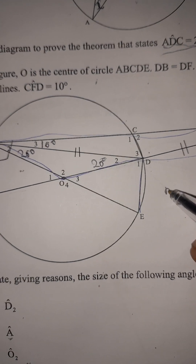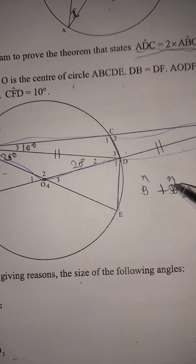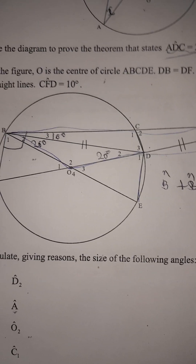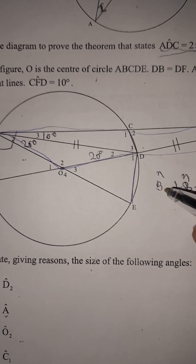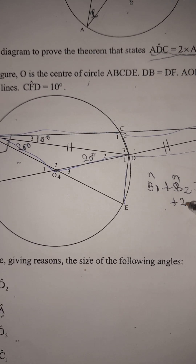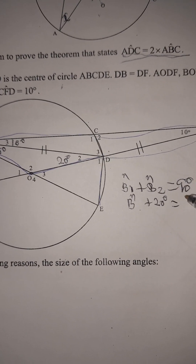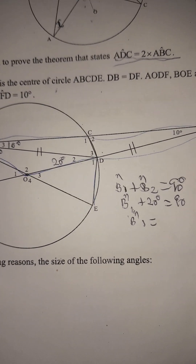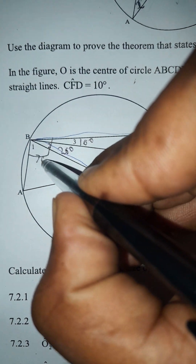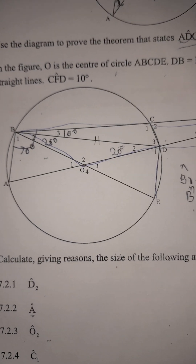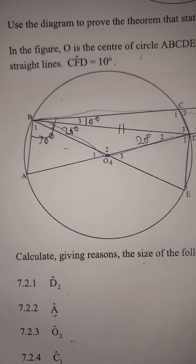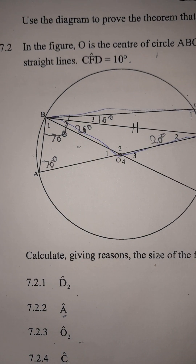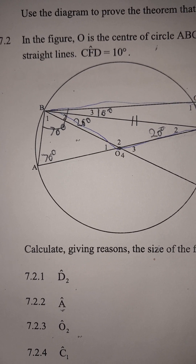To get angle B1, remember that angle B1 plus angle B2 equals 90 degrees — angle in a semicircle. We already have angle B2 as 20 degrees, so angle B1 equals 90 minus 20, which is 70 degrees. Since BO and OD are equal radii, the corresponding angle is also 70 degrees.